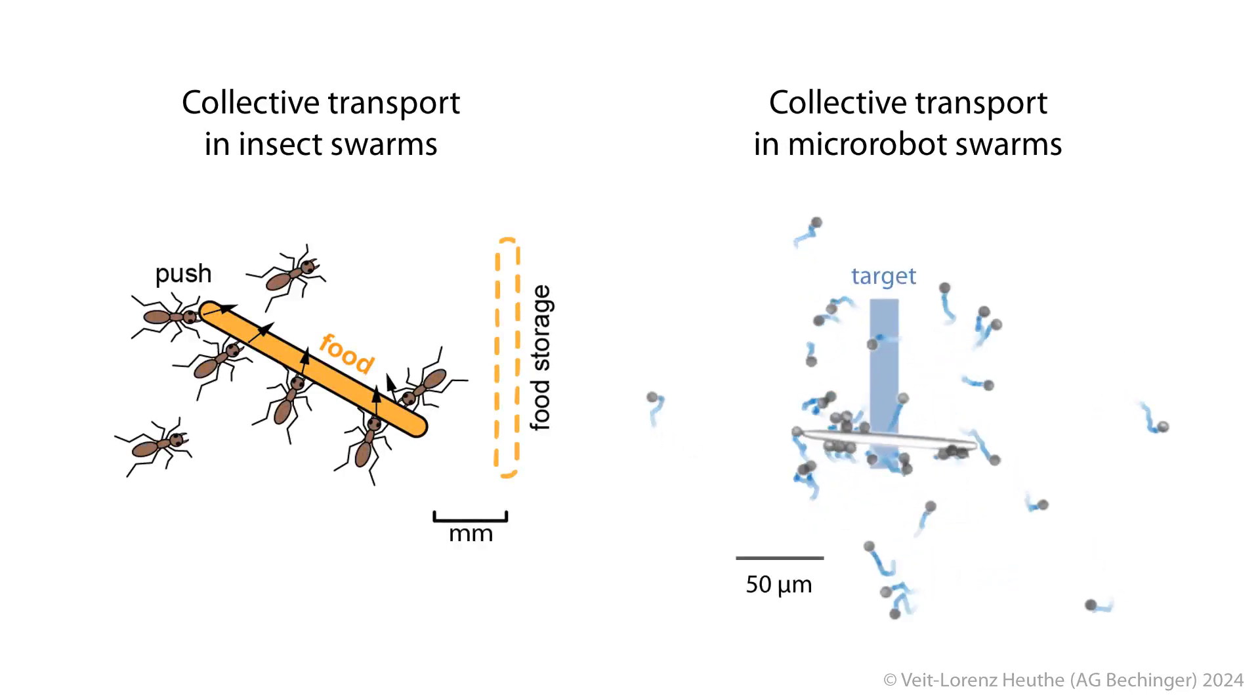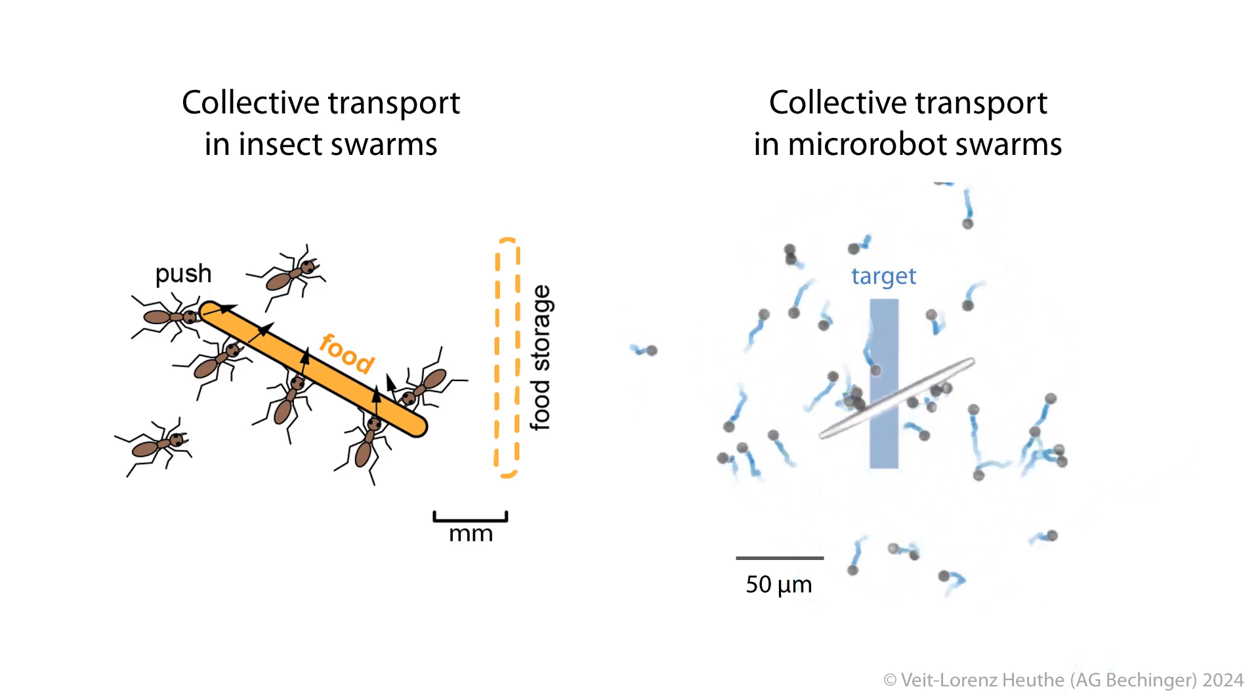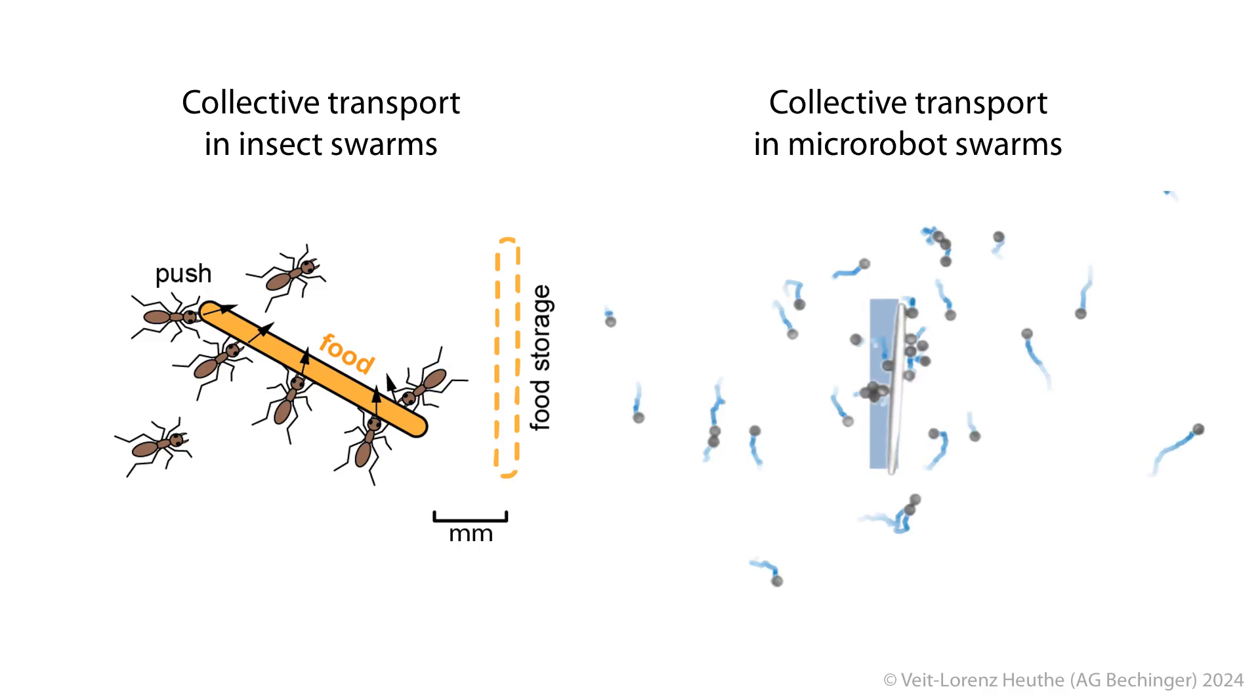In this study, we demonstrate the implementation of an advanced machine learning algorithm to steer micro-robots. Just as a swarm of ants can carry an object much larger than themselves, these micro-robots, each only 6 micrometers in size, can collectively transport large objects.